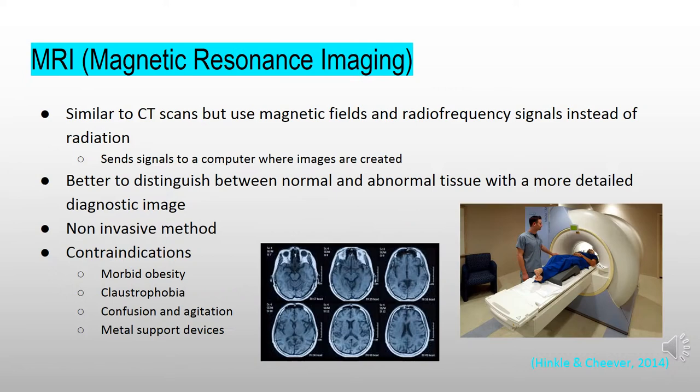MRI stands for magnetic resonance imaging. MRIs are similar to CT scans except that magnetic fields and radio frequency signals are used instead of radiation. MRIs are able to better distinguish between normal and abnormal tissue when compared to CT and develop a much more detailed diagnostic image. It is a non-invasive method that allows doctors to check for abnormalities and diagnose medical conditions such as blood clots, tumors, and orthopedic injuries. Recent improvements in technology have contributed to the design of certain medical devices such as infusion pumps and ventilators deemed safe for the MRI room.